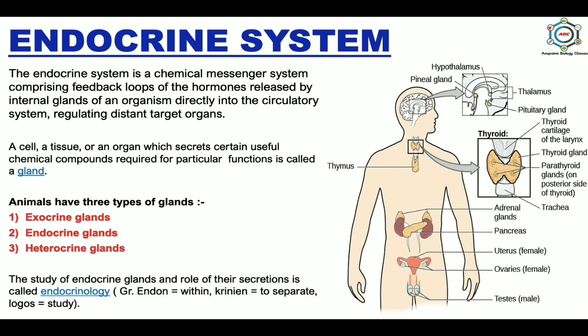The study of endocrine glands and the role of their secretions is called endocrinology. In Greek, endon means within, krinein means to separate, and logos means study. So endocrinology is the branch of science that deals with the study of endocrine glands, their role, and functioning in our body.